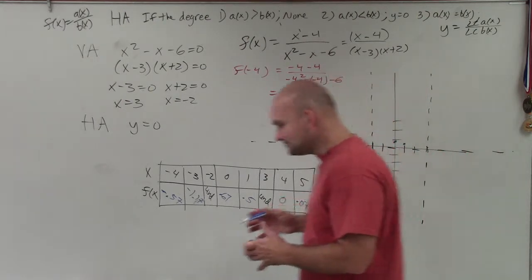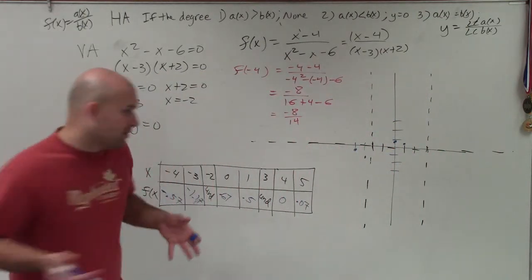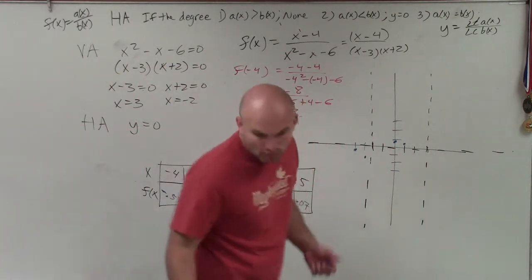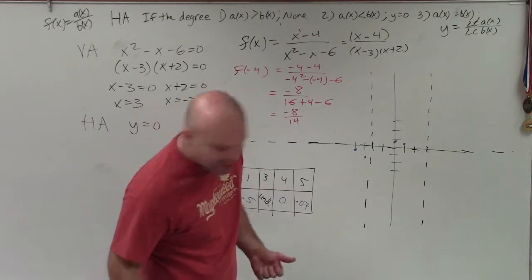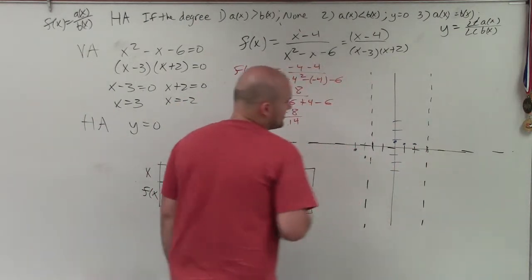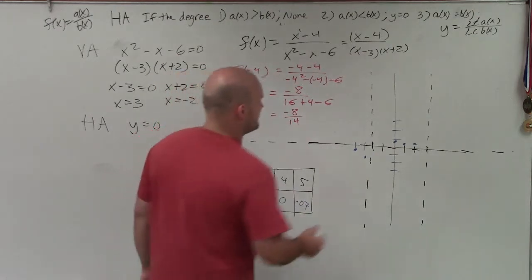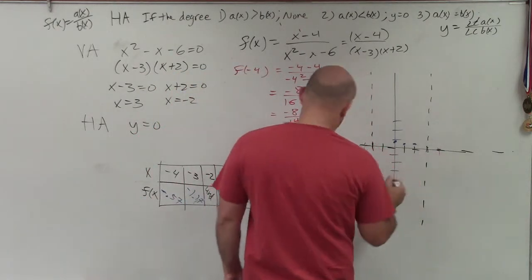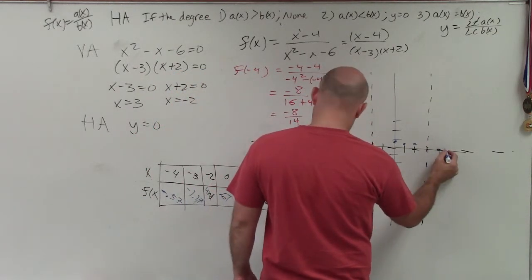Now, you might want to know some other points to kind of help you graph this. And I can see that 2 is also at 0.5. Now, let's go to 4. So 4 is at 0. And 5 is at 0.07.